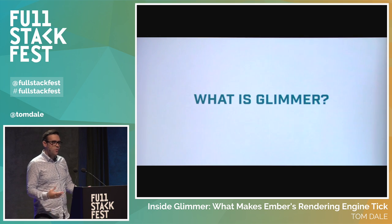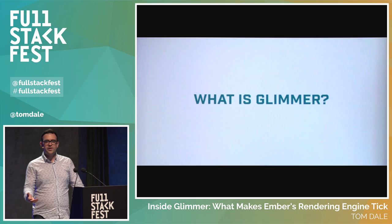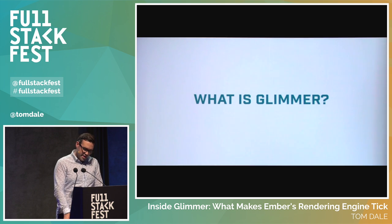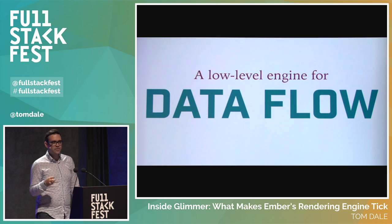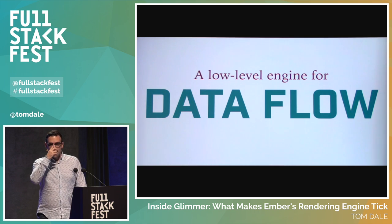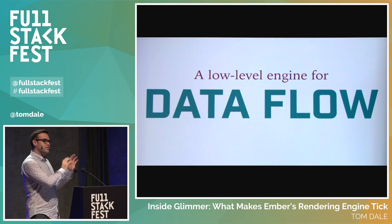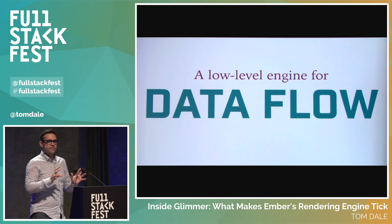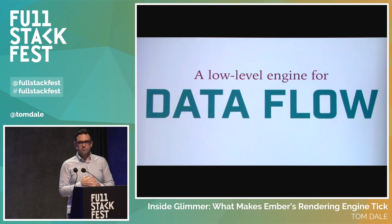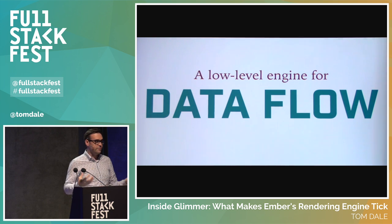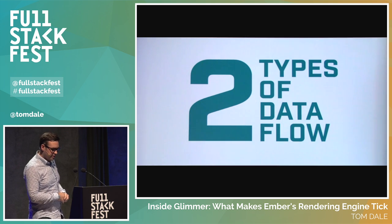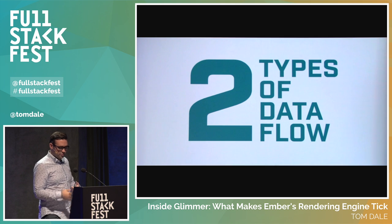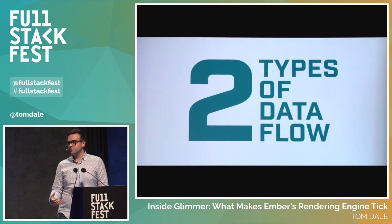So fundamentally, what is Glimmer? I called it a rendering engine before, but maybe the best way to think about Glimmer is that it's actually a very low-level engine for data flow. I want to talk about how different frameworks model change detection, data flow, and bindings — and then show how you can represent all of those using this low-level Glimmer engine. At a high level, there are two types of data flow in most front-end applications.